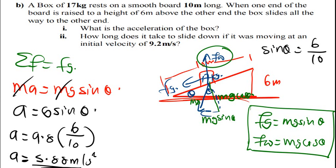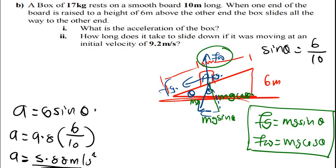The question continues. This is part 2. How long does it take to slide down if it was moving at an initial velocity of 9.2 meters per second? So, here, I think the best, since we have the displacement, the best thing to do is, we need first to find the final velocity. We need to find the final speed. I have this formula, the third equation. V final is equal to V initial plus 80. But, I don't have the final velocity. But, since I've got the displacement, which is 10, I can go ahead and find the distance using the third equation.